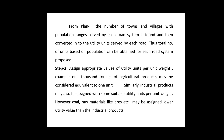From Plan 2 or Phase 2 we get the number of towns and villages with their population ranges served by each road system, and then they are converted into the utility units served by each road. Thus the total number of units based on the population can be obtained from each road system which will be proposed. The next step is to assign the appropriate values of the utility units per unit weight.